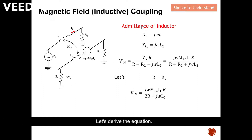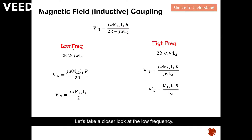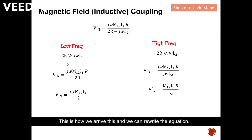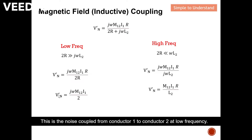Let's derive the equation. We analyze two factors: low frequency and high frequency. At low frequency, we look at the denominator — when frequency is low, j-omega-L2 is a very small number, so we can assume 2R is much larger than j-omega-L2. We can therefore remove j-omega-L2 from the denominator, and after canceling common terms, we arrive at the noise coupled from conductor one to conductor two at low frequency.